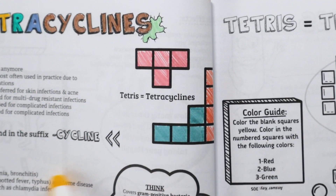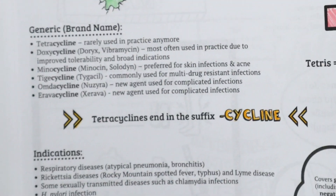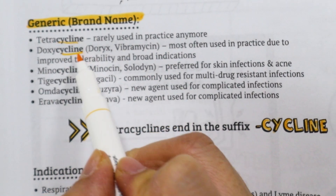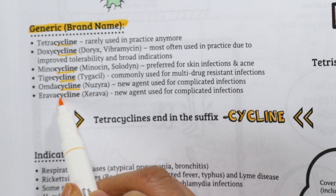The drugs in this class all end in '-cyclin,' such as tetracycline, doxycycline, tigacycline, and omadacycline.